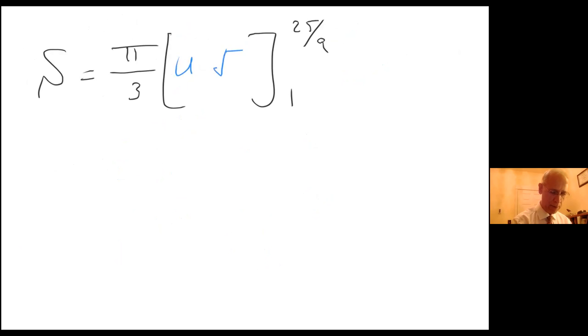U times square root of u times square root of u makes it a little bit easier for me to do my calculation. So that equals π over 3 times 25 over 9.